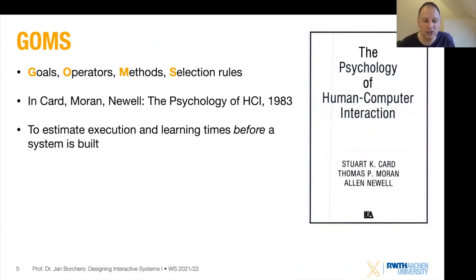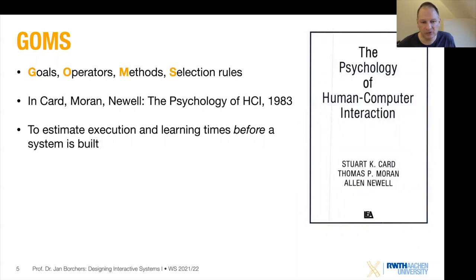This was published by Card, Moran, and Newell — you've seen the CMN model. It was published in The Psychology of HCI, just as the GOMS model. What Card and his colleagues did with the GOMS model was create a mathematical model — that's why we're covering it in this section — that allows you to estimate execution times for using an interface before you actually build the system.